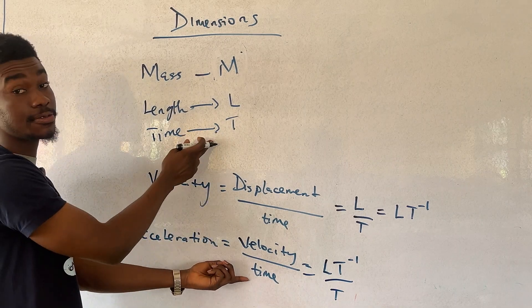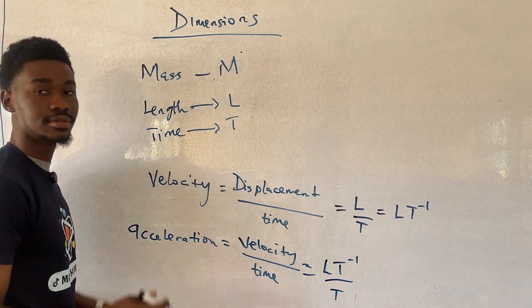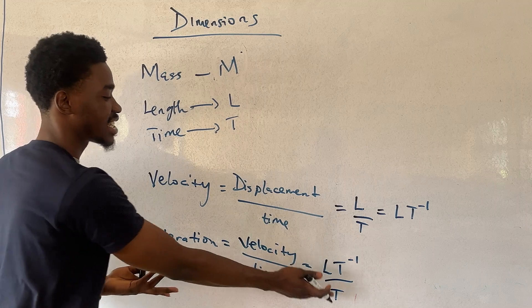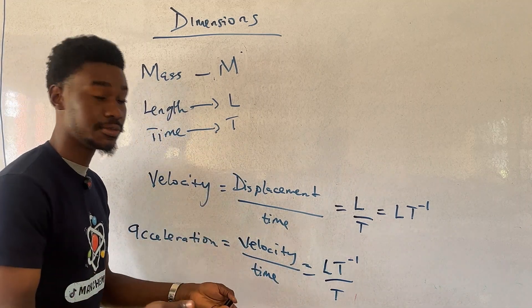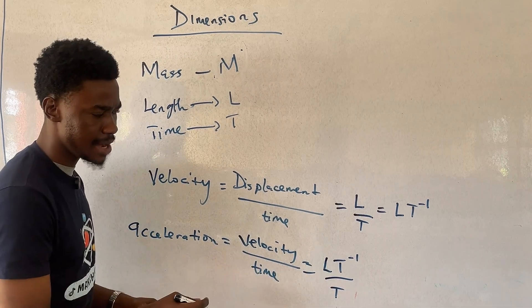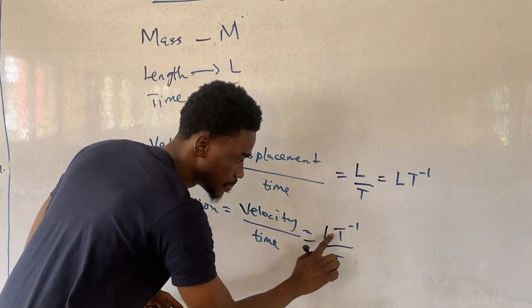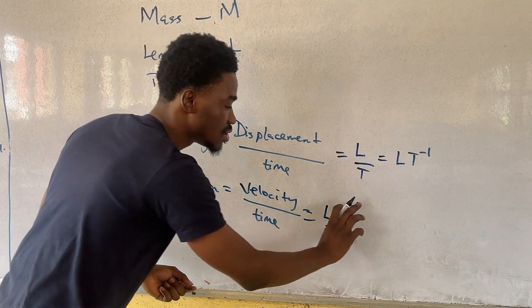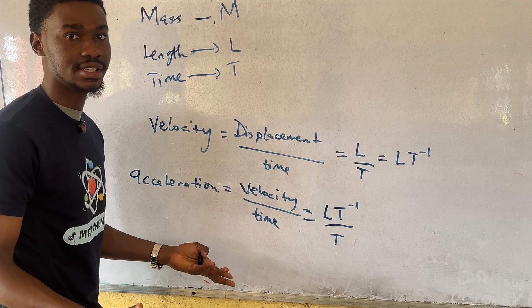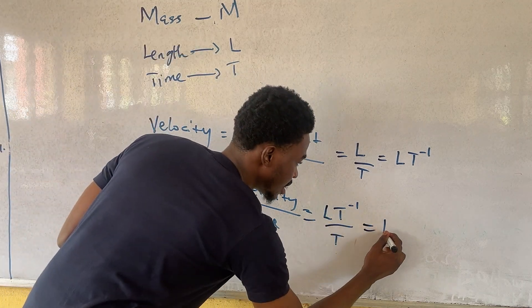And now, for the denominator, we write T. Because remember, the dimension for time is T. Now, back to mathematics. How do we express this as one single expression instead of in terms of a fraction? Now, remember, from the laws of indices, when we have something up and down and they happen to be the same thing, what you do to their powers is you subtract their powers.